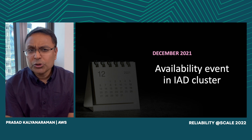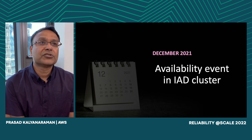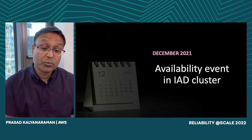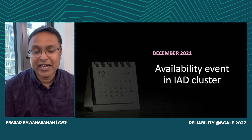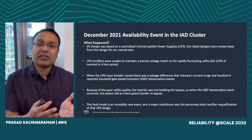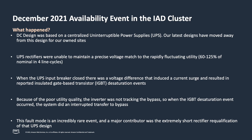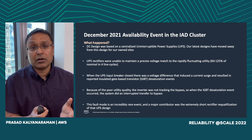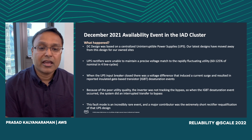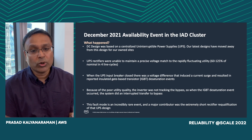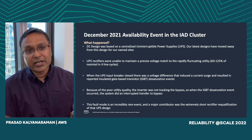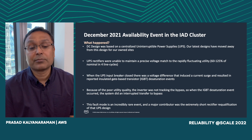I'm going to talk about a fairly unusual event that happened in Virginia in December — December 22nd specifically. It was so unusual that we worked with multiple UPS manufacturers to try to solve for it. In one of our Virginia data centers, we had a design based on a centralized UPS — our latest designs have moved away from that. What happened was the UPS rectifiers were unable to maintain precise voltage match with the utility, which was fluctuating very frequently, so the rectifiers couldn't maintain that precise voltage match.